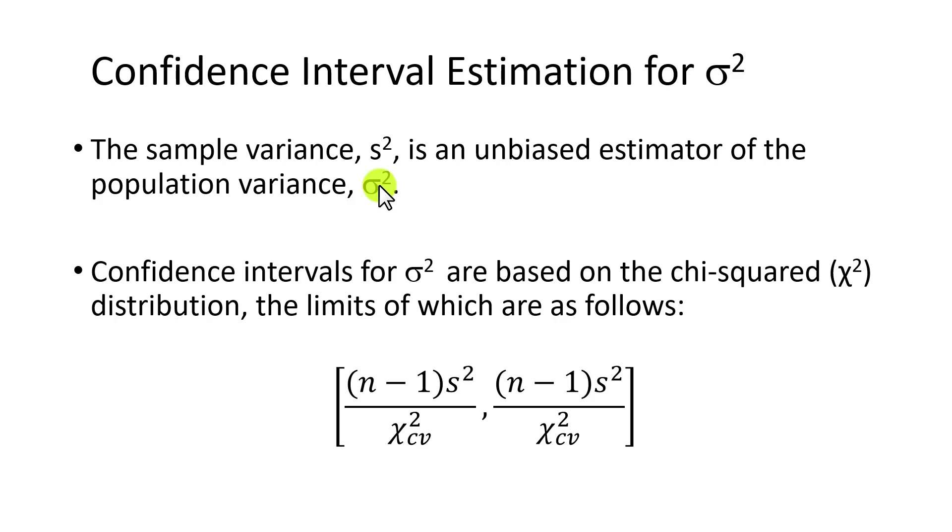In operations management, for example, variance could be used as a measure of efficiency. The greater the variance, the less efficient is the process.